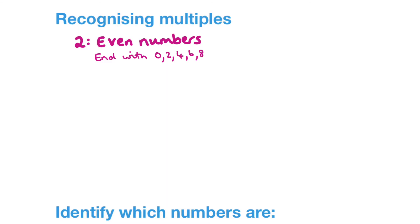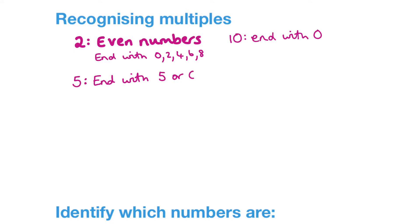So we're going to have a look at recognising multiples. There are certain times tables that are easy to spot, and therefore certain multiples that are easy to spot. I'm going to get you to pause the video and see if there are any times tables you can identify just by looking at the number - for example, can you tell if it's in the two times table?